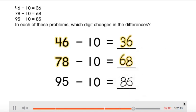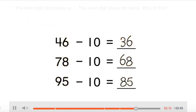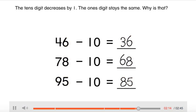In each of these problems, which digit changes in the differences? The tens digit decreases by 1. The ones digit stays the same. Why is that?